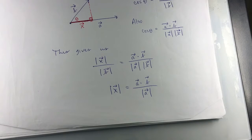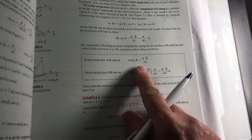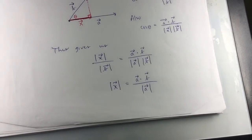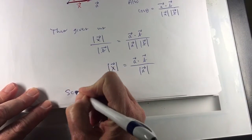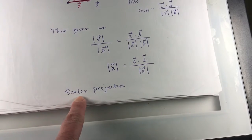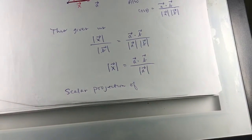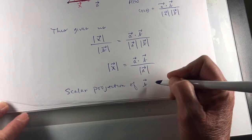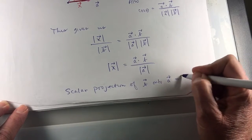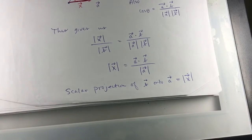Looking it up in the book, yes — here it is. This is the scalar projection of B onto A, and there's the formula for it, which is exactly what we just derived. So I'll write that in the notes: the scalar projection — 'scalar' indicates it's a number — the scalar projection of vector B onto vector A is the magnitude of vector X.